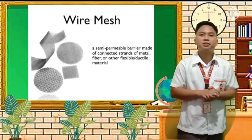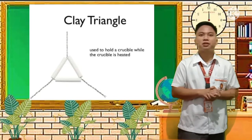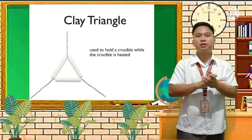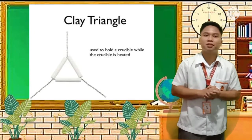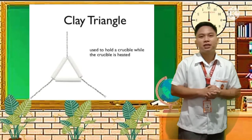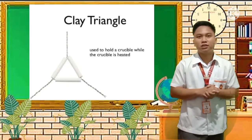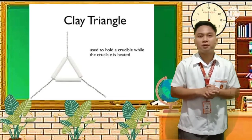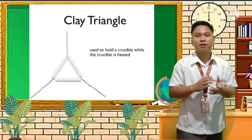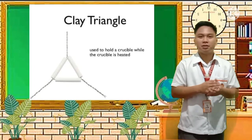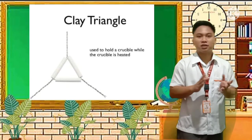Next we have the clay triangle. It is called a triangle because of its triangular shape as shown in the picture. It is used to hold a crucible while the crucible is being heated. The clay triangle supports the crucible during experimentation to avoid accidents.